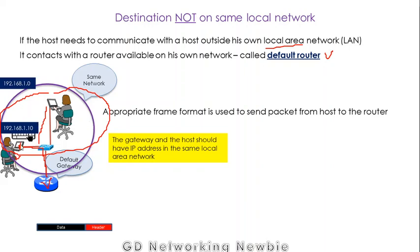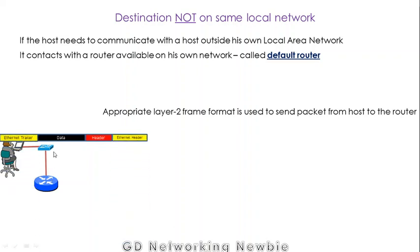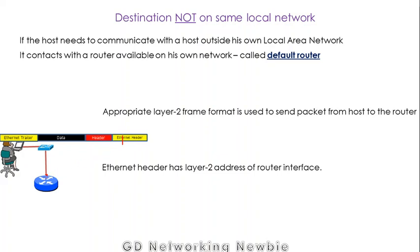For example, this user has generated a packet, and that packet has to be sent using the Ethernet medium. That packet is encapsulated within an Ethernet header and Ethernet trailer. In this Ethernet header, we have the layer 2 address — specifically the MAC address — of the router interface. This user then sends that frame to the router.